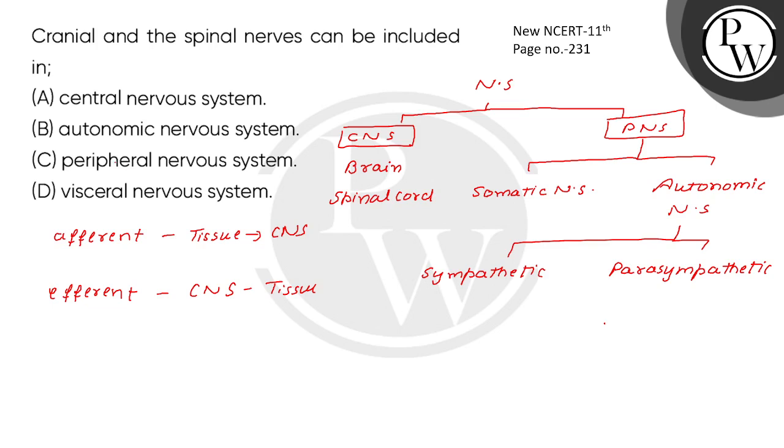See what happens here. The nerves, cranial nerves and spinal nerves, where are they included? In central nervous system, autonomic, or visceral nervous system? Peripheral nervous system is correct. The visceral nervous system is part of the peripheral nervous system and it comprises the whole complex of nerve fibers.